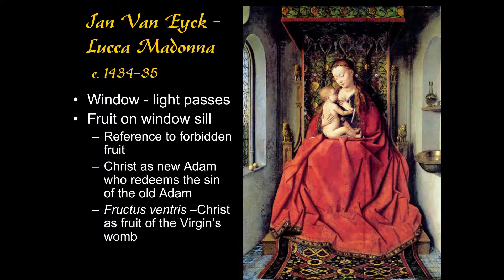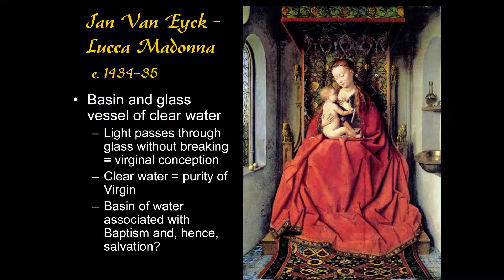Looking at the niche in the wall on the right, we see a basin filled with clear water and a glass vessel also with water in it. Light can penetrate the glass vessel too without breaking it — just like it goes through the window — so could that also refer to the virginal conception? The clear water could certainly refer to purity, the purity of the Virgin. Some people go further and say the basin of water could be associated with baptism, and since baptism is one of the saving sacraments, this could refer to salvation.